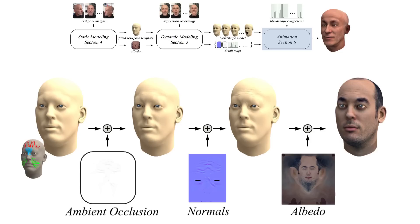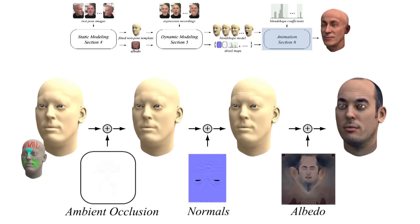A radial basis function regressor is trained offline. At runtime, a shader implementation allows for real-time computation of the dynamic detail maps.